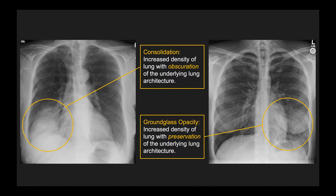Before we start I just wanted to define two terms. The first is consolidation, which means an increased area of lung density that causes obscuration of the underlying lung architecture. In this example there's an area of increased opacity and it is so dense that it obscures the underlying vessels.